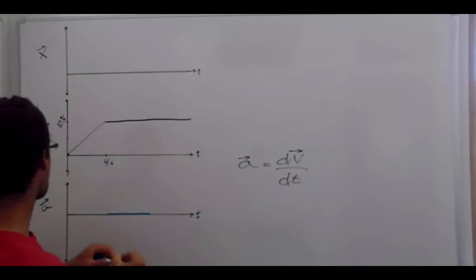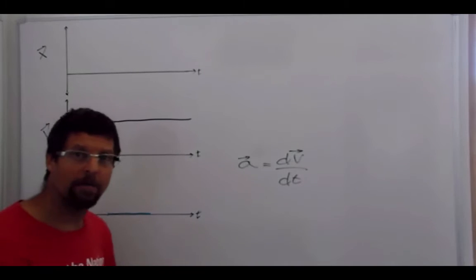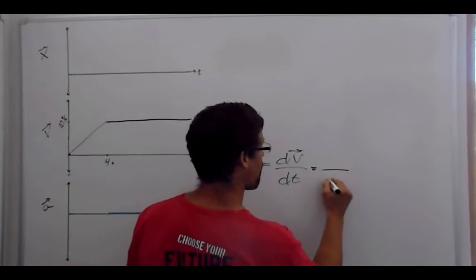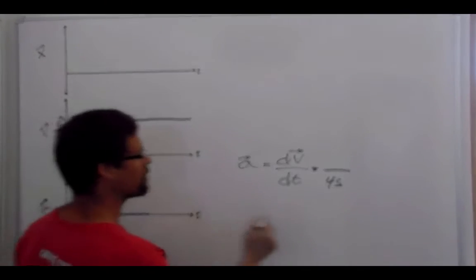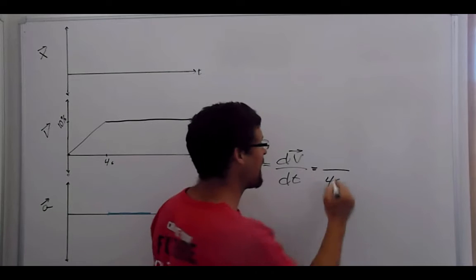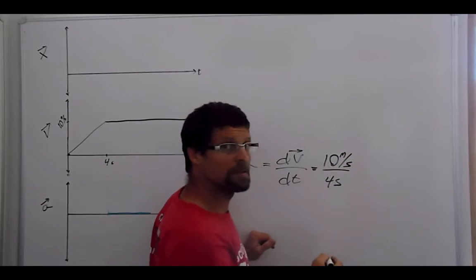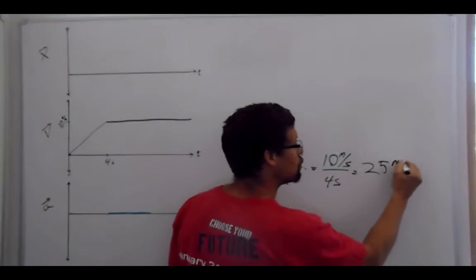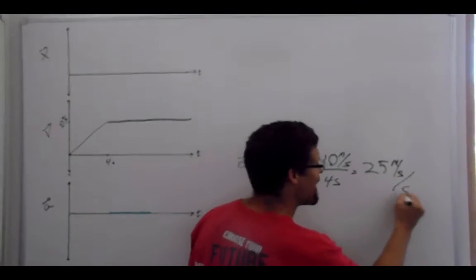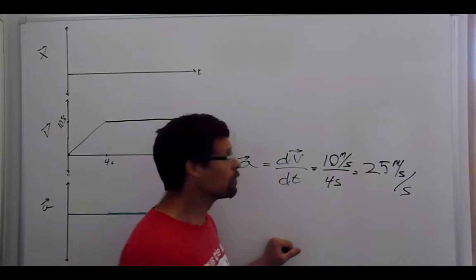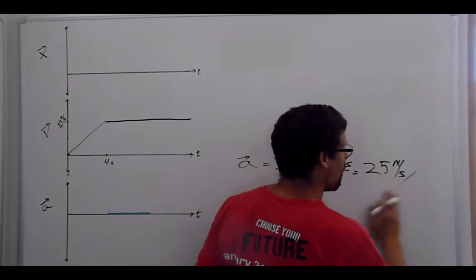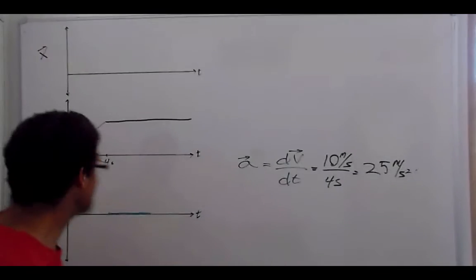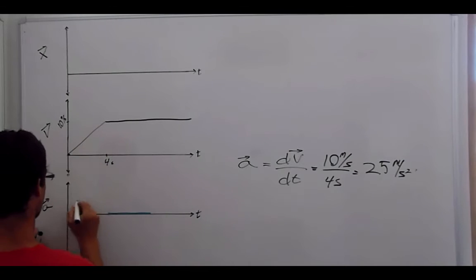But here, I have acceleration. I'm increasing my velocity. How fast? Well, over four seconds, I increase my velocity from zero to ten, that's ten meters per second. We divide that up, that's I increase my speed 2.5 meters per second every second. So 2.5 meters per second per second, or 2.5 meters per second squared is the acceleration during this time.